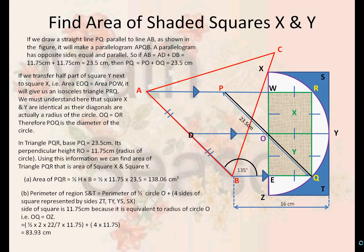Each side of the square is 11.75 cm because it's equivalent to the radius of circle O, i.e., OQ is equal to OZ.